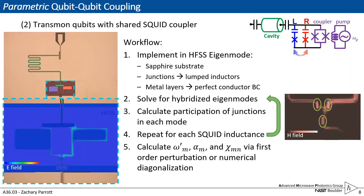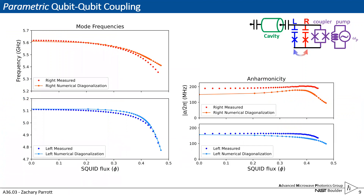If we look at how we compare to our experimental data, here on the left panel we have both qubit mode frequencies where the measured experimental data is shown in the unconnected dots and our simulation is shown in the connected line. We replicate much of the same features of the mode frequencies given assuming a basic SQUID model. The anharmonicities are in the ballpark and show some qualitative features of the rise and fall, but there's still some work to be done here.